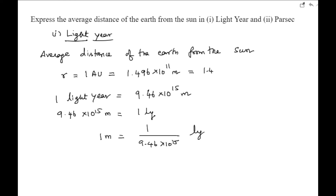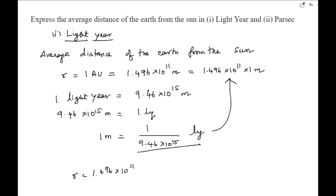Substituting the value of one meter into the equation: r is equal to 1.496 × 10¹¹ multiplied by 1 divided by 9.466 × 10¹⁵ light years. On solving this, we get r equal to 1.58 × 10⁻⁵ light years.